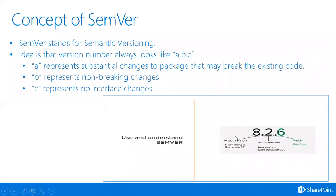A represents the substantial changes to a package that may break the existing code — you can say the major version. B stands for minor version, and C stands for patch or bug fixing. As we saw yesterday with moment.js, the version number was in the form of A.B.C.